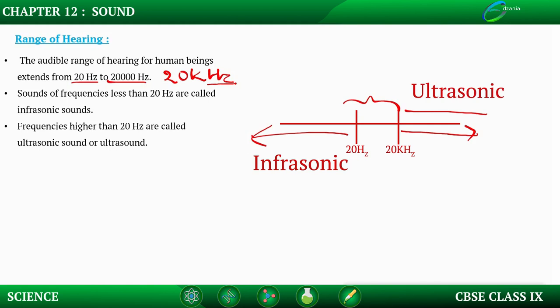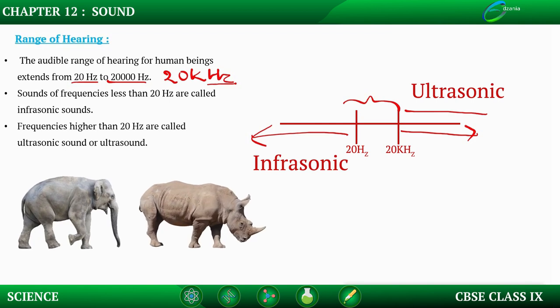This is the audible range for human beings. Infrasonic is below 20 hertz and ultrasonic is above 20 kilohertz. There are animals who can detect that. For example, elephants and rhinoceroses are sensitive to very low frequency or infrasonic frequencies. That's why at times of natural calamity like earthquakes, animals can sense it but human beings can't because of the frequency of those sound waves.